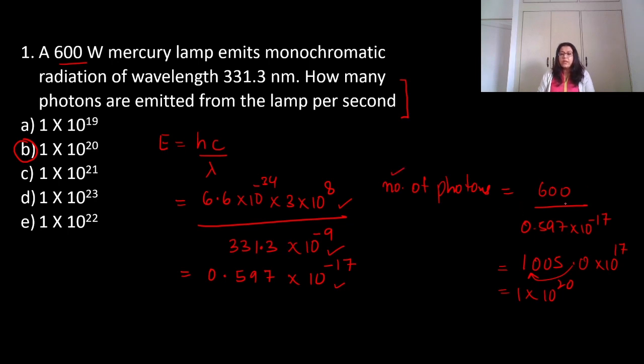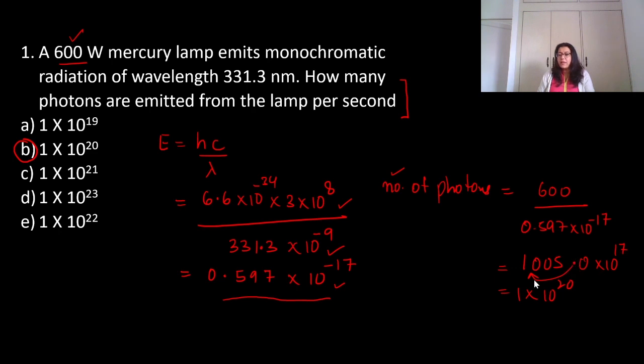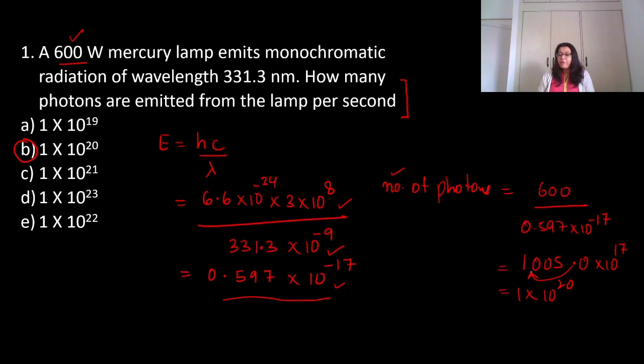This equals 0.597 into 10 raised to power minus 17. Number of photons equals the wattage given divided by energy calculated. Energy given is 600 watts divided by 0.597 into 10 raised to power minus 17, which is 1005 into 10 raised to power 17. Shifting the decimal gives 1 into 10 raised to power 20.